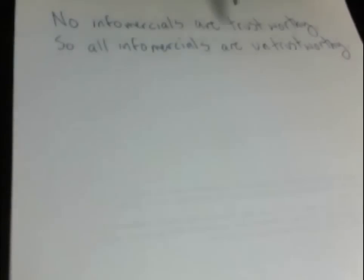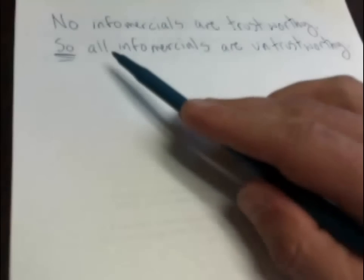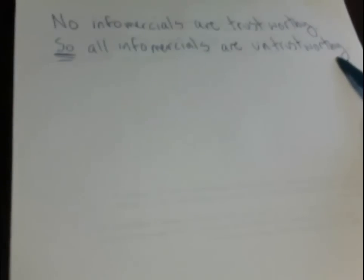The argument is, no infomercials are trustworthy, so all infomercials are untrustworthy. The 'so' is a conclusion indicator. That's a giveaway that this second sentence, all infomercials are untrustworthy, is the conclusion. That leaves no infomercials are trustworthy to be a premise.